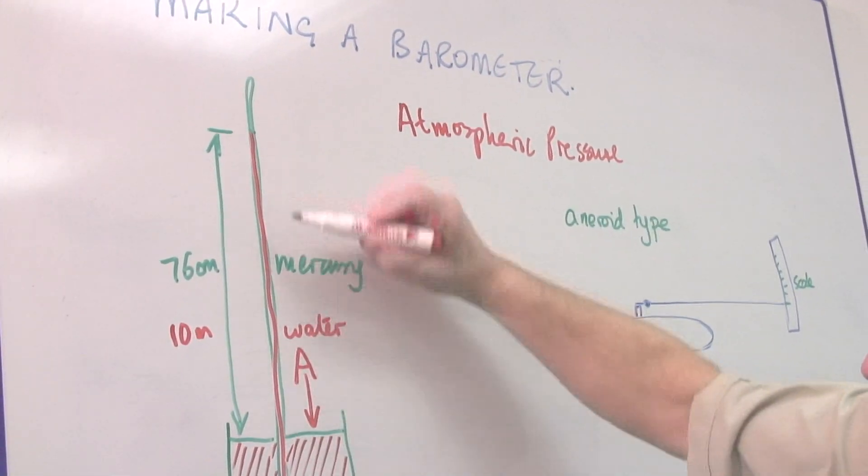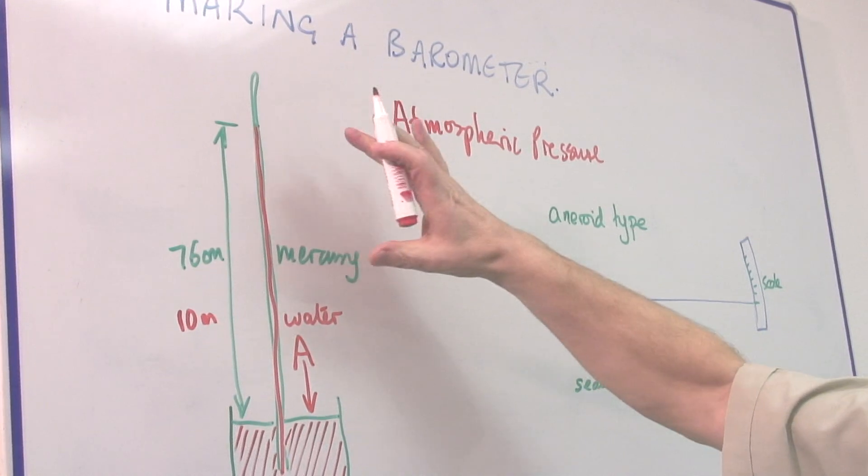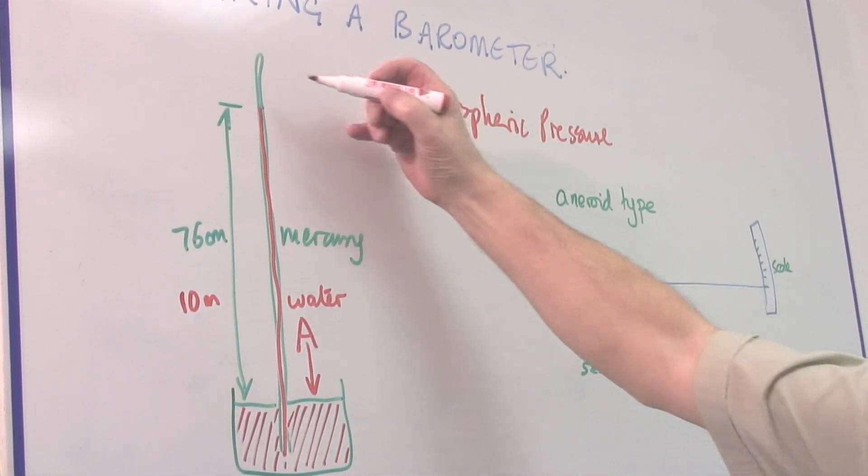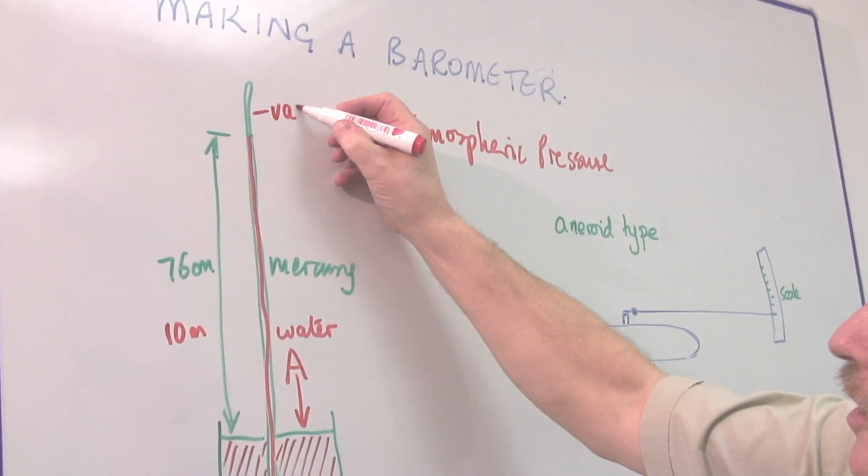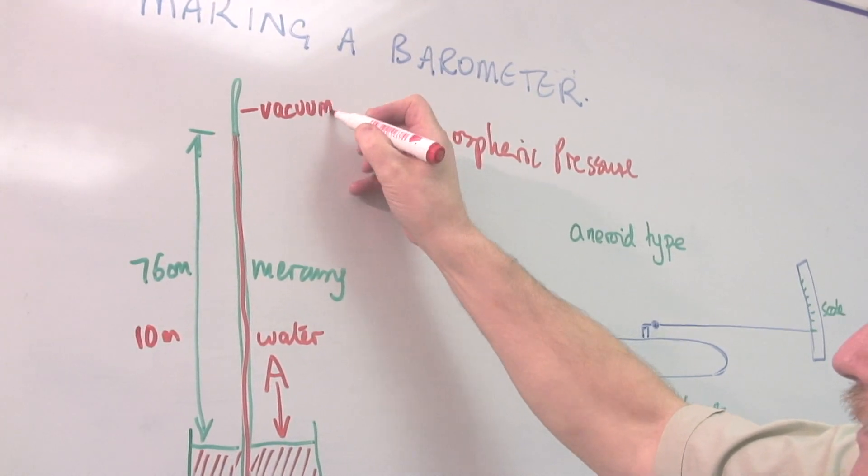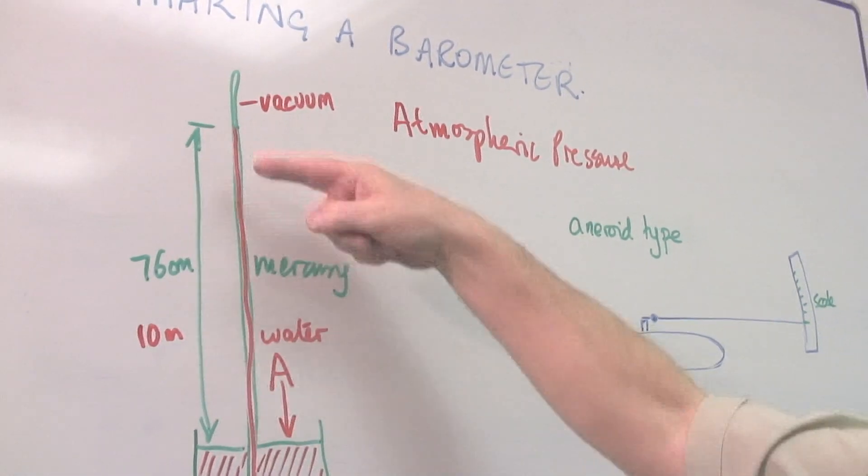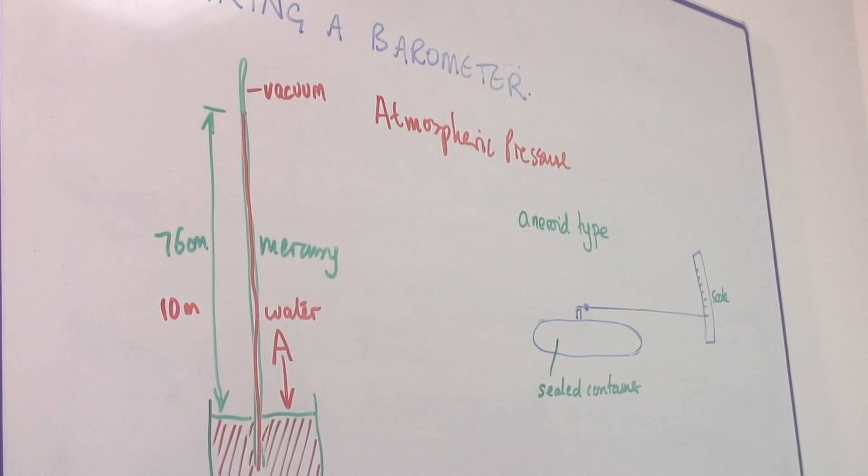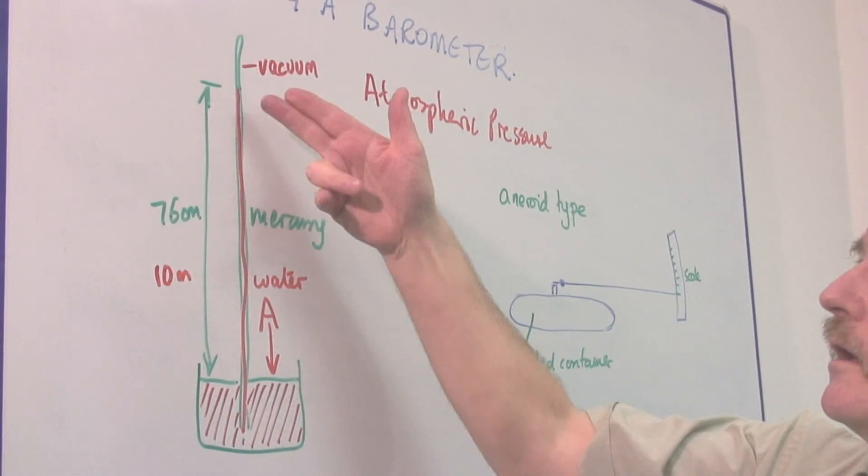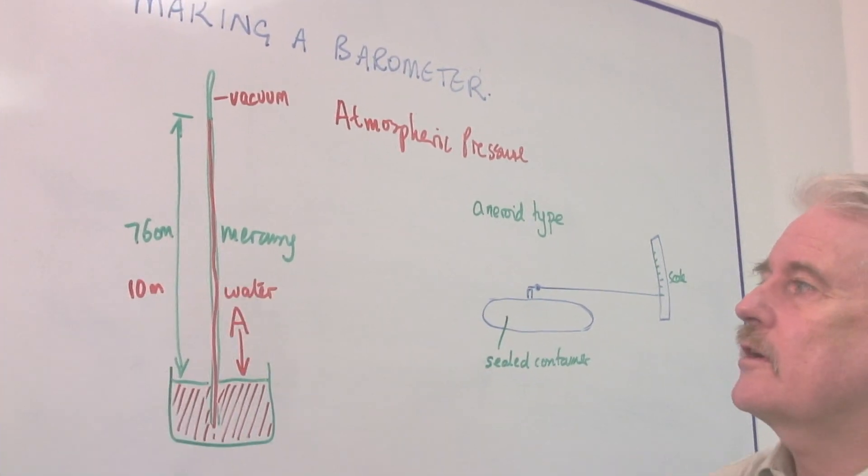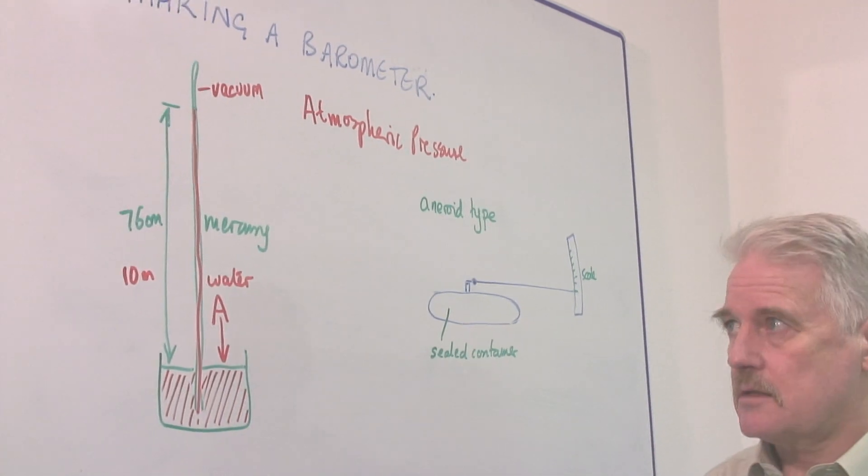This tube is filled right to the top at first, and when you raise it up, you get this vacuum in the top. So that is a direct measurement in centimeters of mercury, or meters of mercury, the atmospheric pressure. Normal atmospheric pressure is about 76 centimeters.